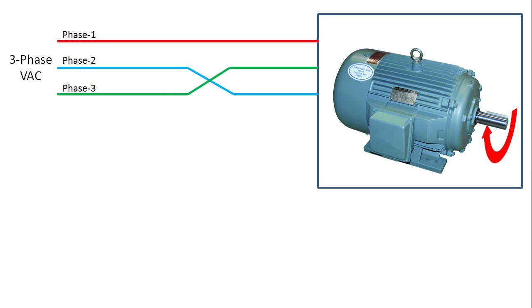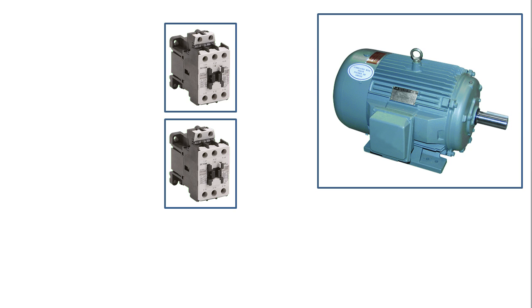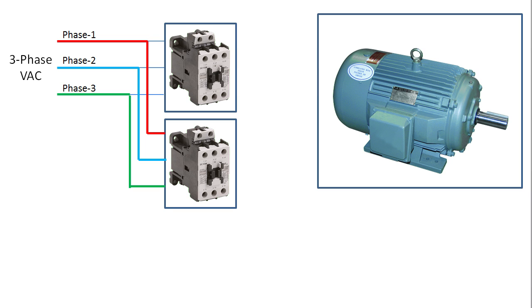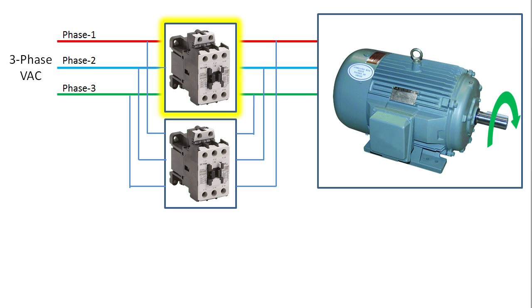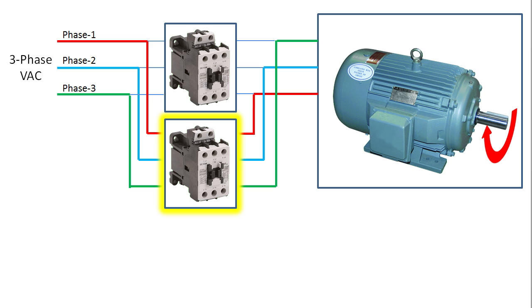To reverse a three phase motor using contactors you just run one set of wires straight through one contactor and a parallel set of wires through another contactor where you swap one set of wires. When this contactor is engaged the motor turns one way and when this contactor is engaged it rotates the other direction.